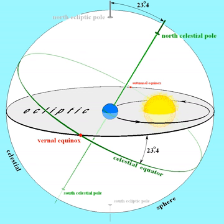If the equator is projected outward to the celestial sphere, forming the celestial equator, it crosses the ecliptic at two points known as the equinoxes.